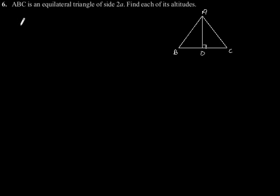Exercise 6.5, Question number 6. ABC is an equilateral triangle of side 2a. Find each of its altitudes.